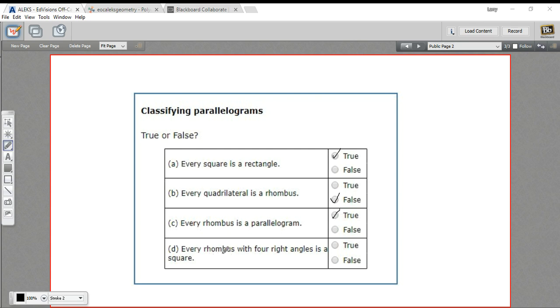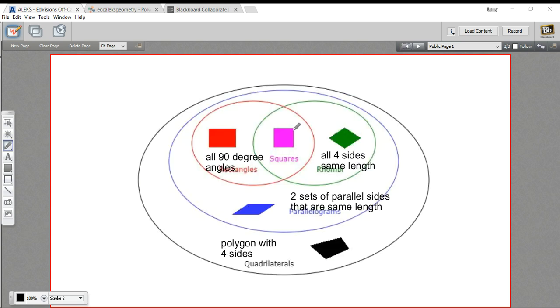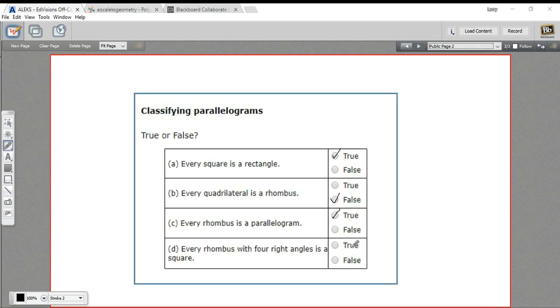And then it says every rhombus with four right angles is a square. And if you look at our diagram, that really is the definition of a square. It's a rhombus and it's a rectangle, which means it has four right angles. So that one is true as well. So that is a little bit of work with classifying quadrilaterals.